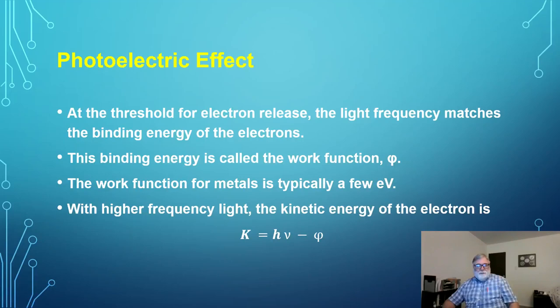As we move to higher-frequency light — hν, where ν is the Greek letter nu — the kinetic energy carried by the electrons equals hν minus the work function φ. So the kinetic energy of the emitted electron equals the photon energy minus the binding energy of the material. This relationship describes the photoelectric effect and the energy imparted to the electrons.